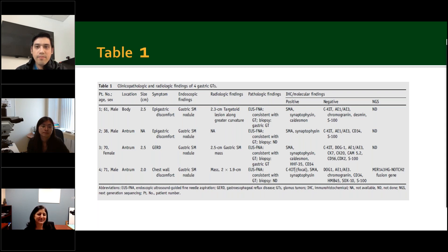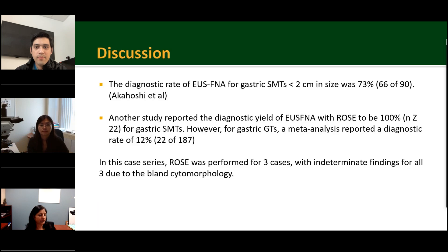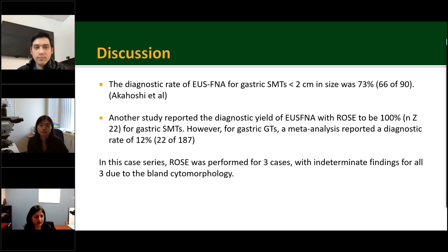Thank you for that detailed comparison with other studies. The diagnostic rate of EUS FNA of gastric smooth muscle submucosal tumors less than 2 centimeters is approximately 73%, ranging from 66 to 90 cases in one study. Another study reported the diagnostic yield of EUS FNA with ROSE to be 100% for gastric submucosal tumors. However, for gastric glomus tumor specifically, a meta-analysis reported a diagnostic rate of around 12%. In this series, ROSE was performed for three cases with indeterminate findings due to bland cytomorphology.